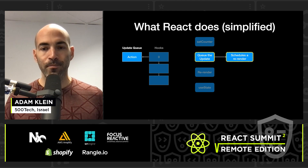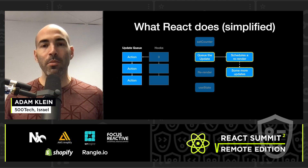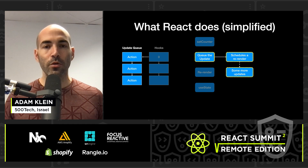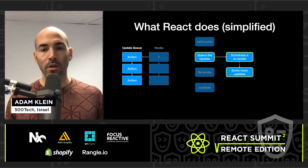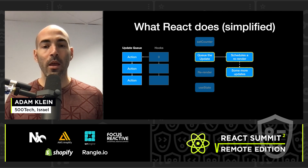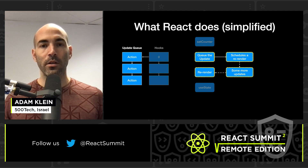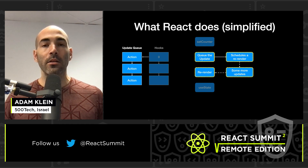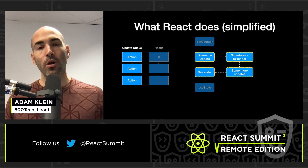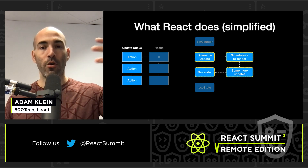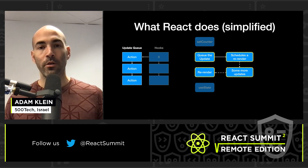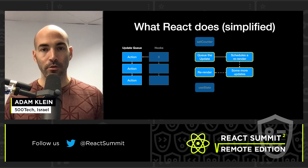Then React just schedules a re-render, which means it flips some flag saying this component needs to be re-rendered. There might be more updates to this hook, other hooks, or hooks in other components, and eventually React decides to re-render all of the components according to their order in the tree.